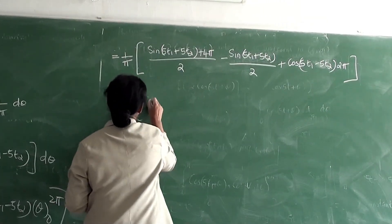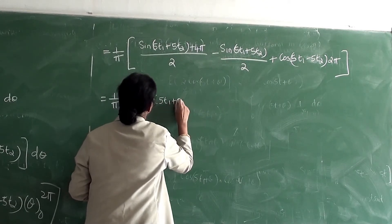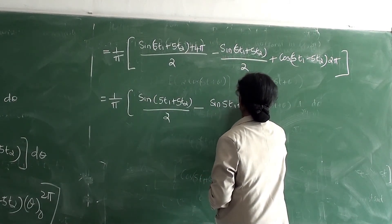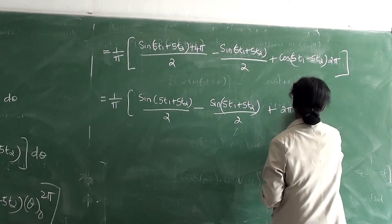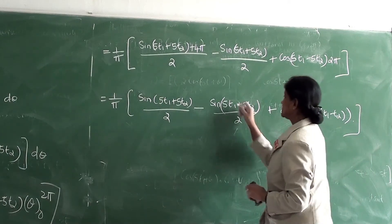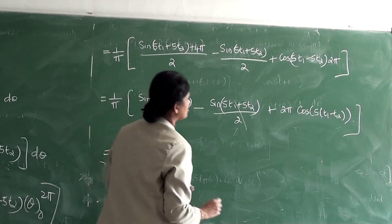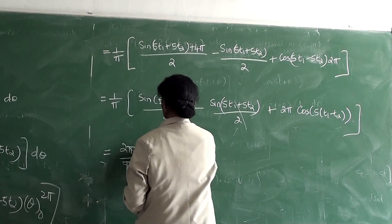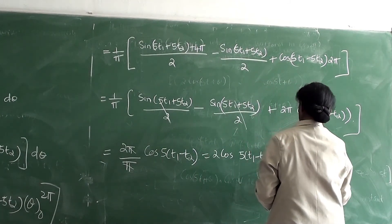This equals (1/π) times [sin(4π + φt1 + φt2) - sin(φt1 + φt2)] divided by 2, plus cos(φt1 - φt2) times 2π. The first two sine terms cancel each other, leaving (2π/π)cos(φt1 - t2), which equals 2cos(φ(t1 - t2)). This is a function of t1 minus t2, so X(t) is a WSS process.